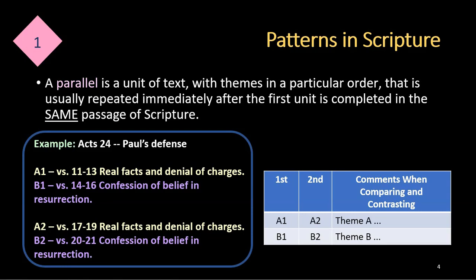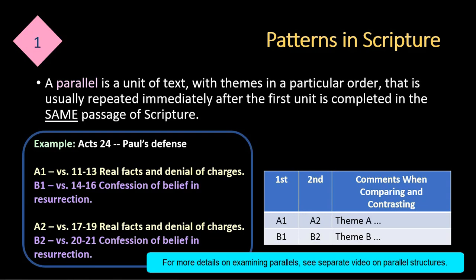In B1, which is verses 14-16, confession of belief in resurrection is stated. And then in A2, which is where the parallel begins to repeat itself — found in verses 17-19 — real facts and denial of charges are made again. And B2 is verses 20-21, where confession of belief in the resurrection is made again. Normally what I do with a parallel is set it up in a chart. In the first row I have the themes A1 and A2, and in the second row I have B1 and B2. In the third column, I sometimes write my comments when I'm comparing and contrasting what I'm looking at.